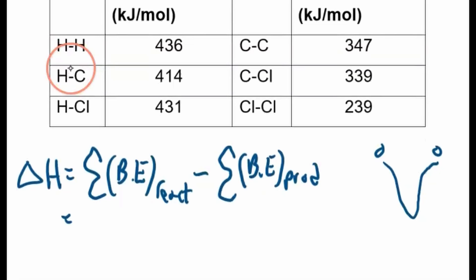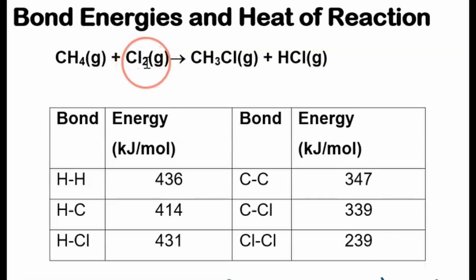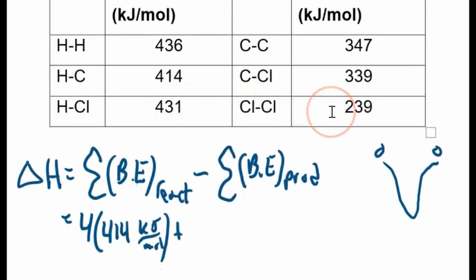We're going to break four C-H bonds. So four times, each C-H bond has a bond energy of 414 kilojoules per mole. Plus, we have a Cl-Cl bond we need to break. So that's 239 kilojoules per mole.